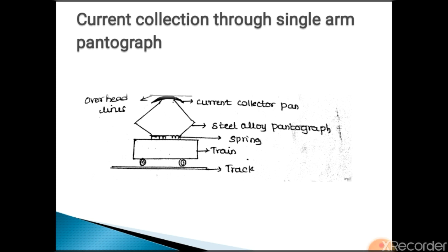Next, we will move on to current collection through a single-arm pantograph, which consists of overhead lines, current collector, steel alloy pantograph frame, spring, train, and track. The pantograph collector is a diamond-shaped current collection fan mounted on the top roof of the vehicle. It is used where vehicles run at high speeds of 110 km/h to 130 km/h and where currents to be collected are 2000 A to 3000 A. It consists of a pentagonal framework of high-tensile alloy steel tubing, with a contact portion of steel with copper strips forced against the overhead contact wire by upward pantograph springs.